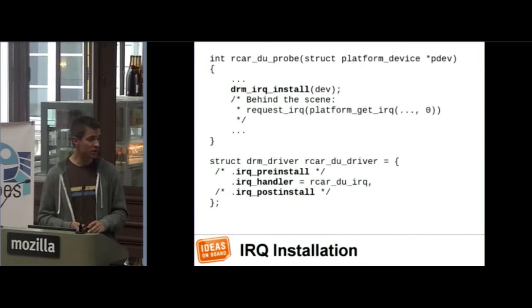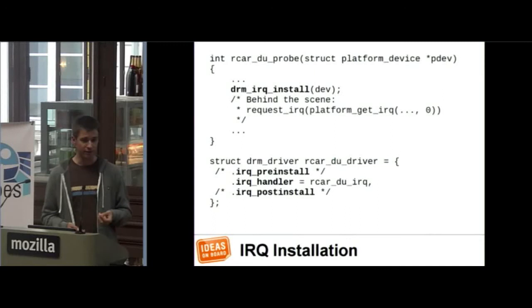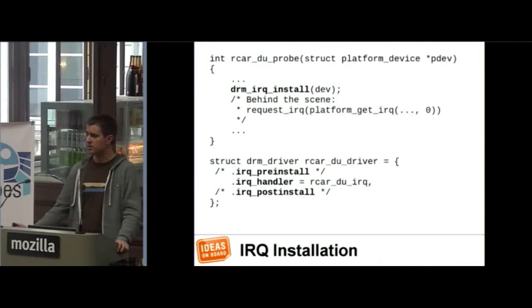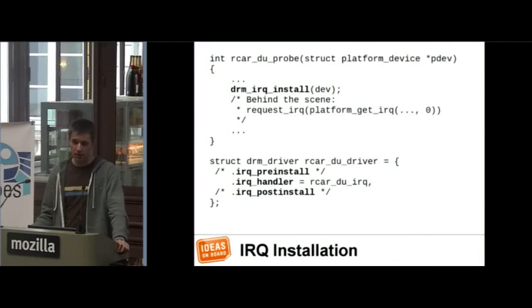For interrupts, there are helpers that can be used. The DRM IRQ install function gets and registers the interrupt handler — you specify the interrupt handling function in the DRM driver structure. That only works if your device uses a single interrupt. If you have multiple interrupts, you need to handle them explicitly without the helper, but that's not extremely difficult.